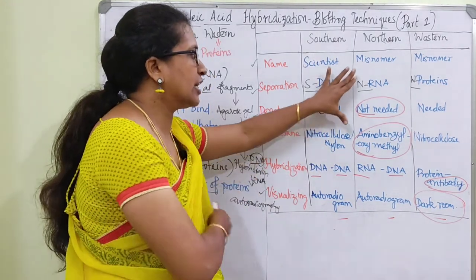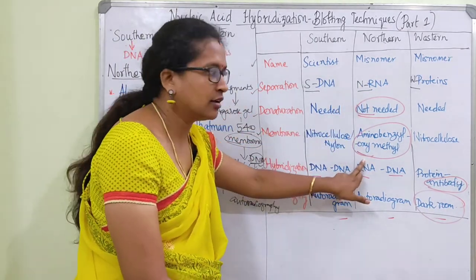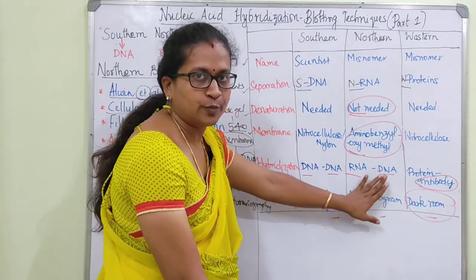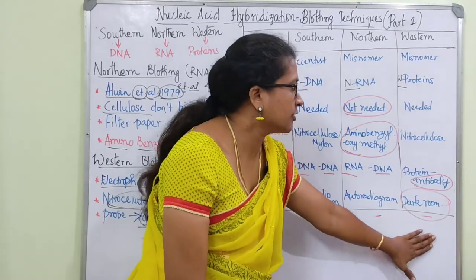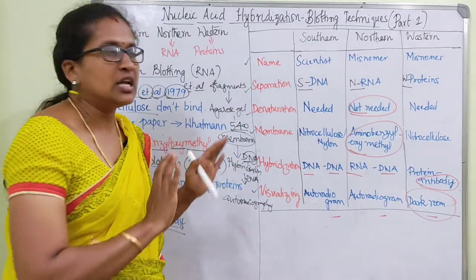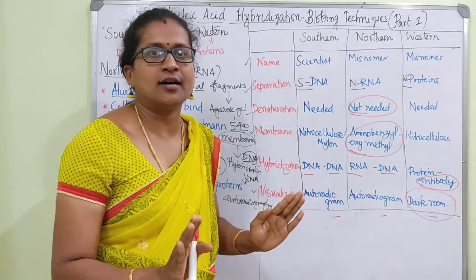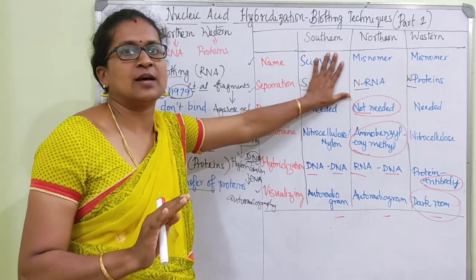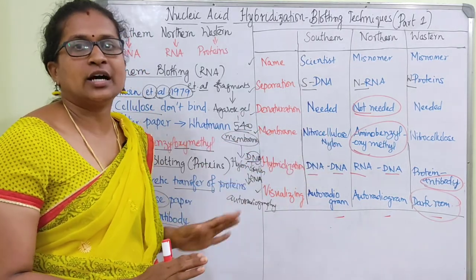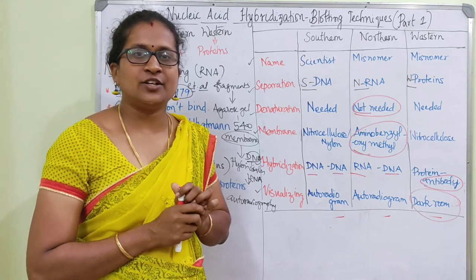If you know the differences across all three techniques, in northern blotting you can see the difference in denaturation and membrane - the membrane is aminobenzyloxymethyl. Hybridization uses antibody or DNA probe, and visualization is in a dark room. The main difference is that there are two types - proteins and RNA versus DNA. It is very simple and useful. Thank you, see you in the next video.